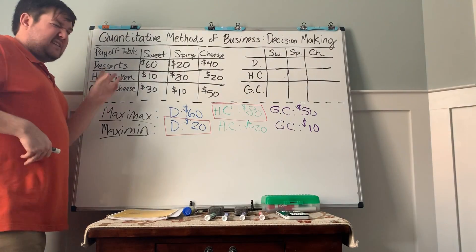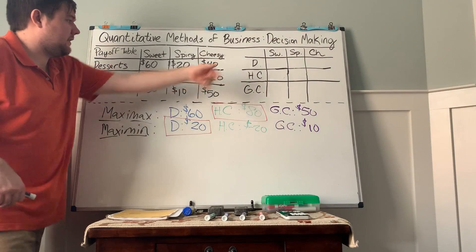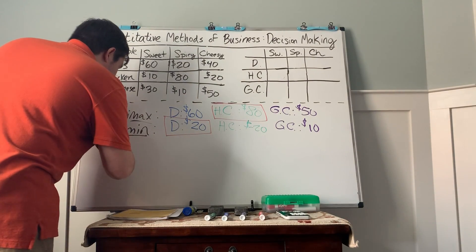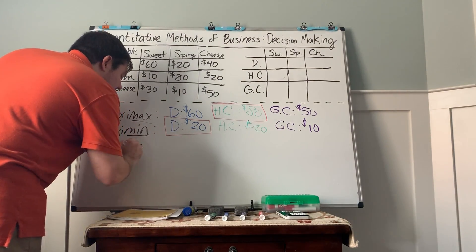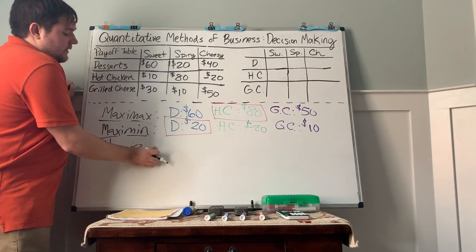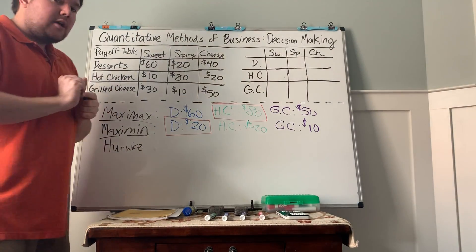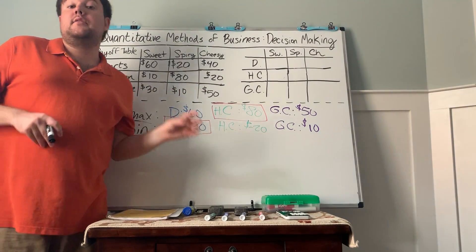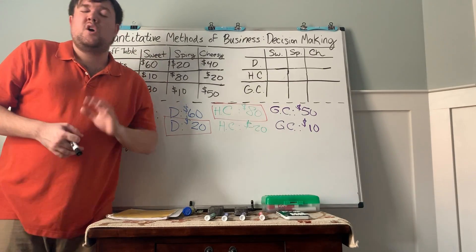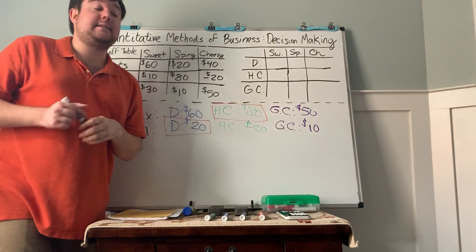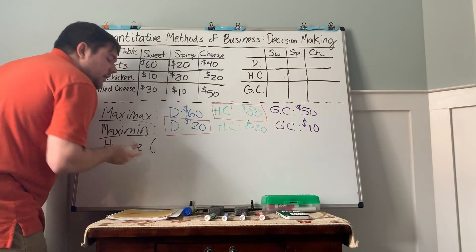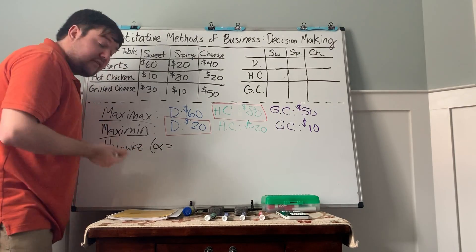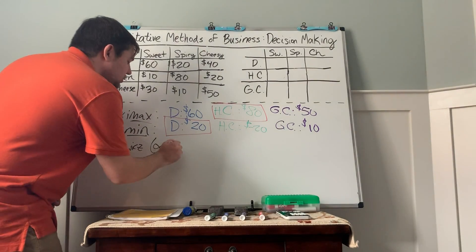The next one is the Herwicks criteria. This is the most optimistic, this is the most pessimistic. This meets somewhere in the middle. We're not completely optimistic, we're not completely pessimistic. In this case, we'll just choose 0.5 for alpha. It's anywhere between 0 and 1.